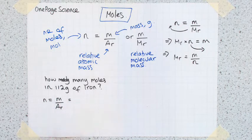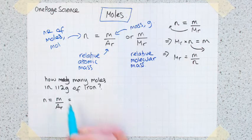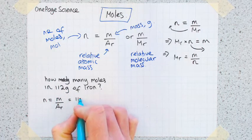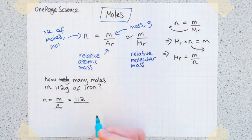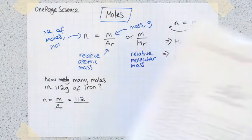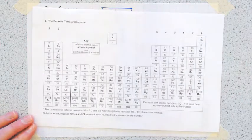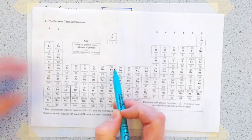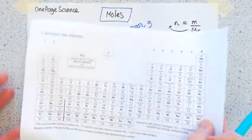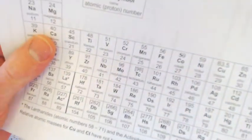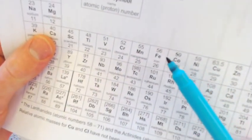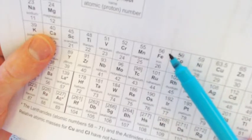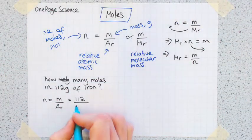Then we substitute in our numbers. So the mass is 112. You then need to grab your trusty friend the periodic table. Iron's here, and its relative atomic mass is 56. So you stick 56 in the bottom part of your equation.